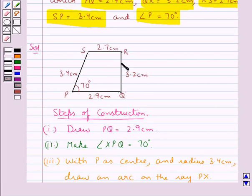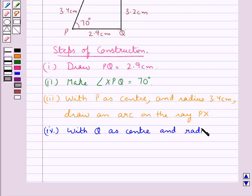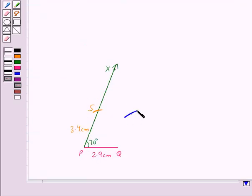Now our next step would be to locate the point R. For this, first we will take Q as the center and radius 3.2 cm and draw an arc. So we have drawn this arc with Q as the center and radius 3.2 cm.